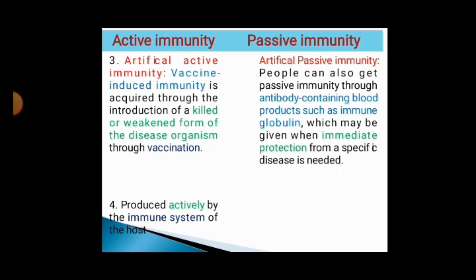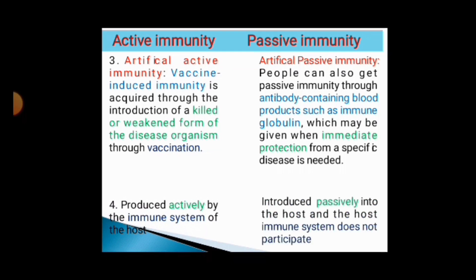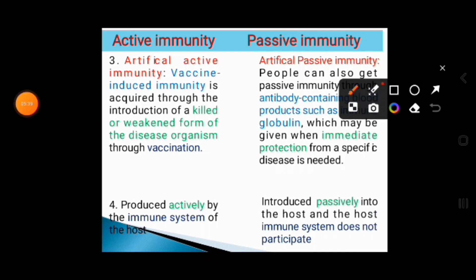Active immunity is produced actively by the immune system of the host. Whereas passive immunity is introduced passively into the host and the host's immune system does not participate. So in passive immunity the host immune system does not participate, but in active immunity the host immune system does participate.